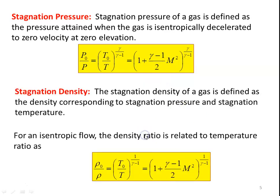And stagnation density: the stagnation density of the gas is defined as the density corresponding to stagnation pressure and stagnation temperature. From P/(ρ) = RT, we can write the equation for stagnation condition: P0/(ρ0) = RT0. Rearranging, we get ρ0/ρ = (T0/T)^(1/(γ-1)). Substituting for T0/T, this equals (1 + (γ-1)/2 · M²)^(1/(γ-1)). This equation is also important.